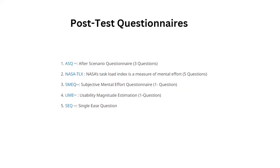One questionnaire I didn't include is called the Net Promoter Score — a single-item questionnaire that asks your participants how likely they are to recommend your system to other people. This is another important aspect of usability testing that allows you to predict the success and potential of your product. I want you to look into the Net Promoter Score, how to use it, and how to interpret it in your usability test. There are plenty of websites that explain it.